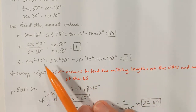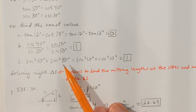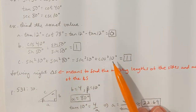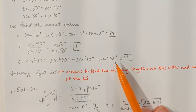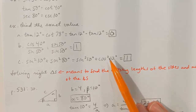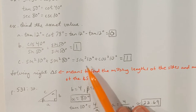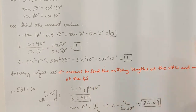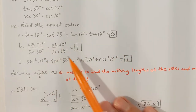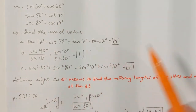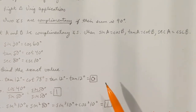Sine squared of 10 degrees plus sine squared of 80 degrees. Sine of 80 degrees is the same as cosine of 10 degrees, so squaring sine of 80 degrees gives cosine squared of 10 degrees, which allows us to use the Pythagorean identity: sine squared plus cosine squared of the same angle equals 1. Although these are not common angles, we really don't need a calculator if we know the rule about complementary angles.